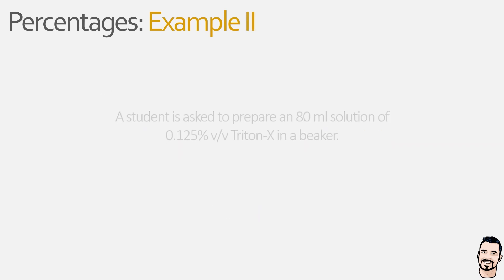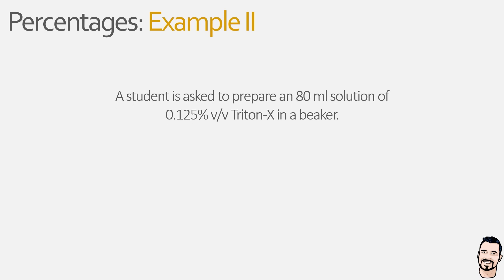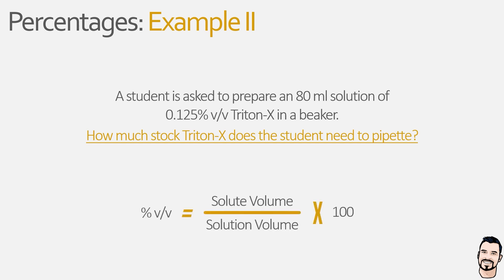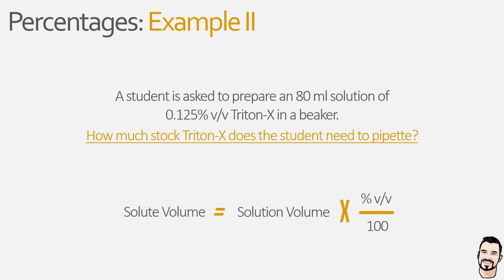Moving on to our second example: a student is in the lab and is tasked with preparing an 80 millilitre 0.25 percent volume per volume solution of Triton X in a beaker. Assuming the stock concentration is 100 percent, the student wants to know how much of the stock Triton X needs to be pipetted into the beaker. Bringing up our associated equation, percentage volume per volume equals solute volume divided by solution volume multiplied by 100. Because we are trying to identify the solute volume, we can use basic algebra to rearrange the equation, giving us: solute volume equals the volume of the solution multiplied by the percentage volume per volume divided by 100.